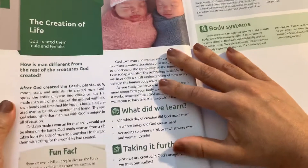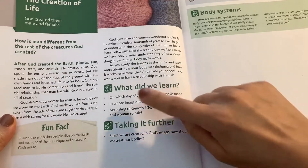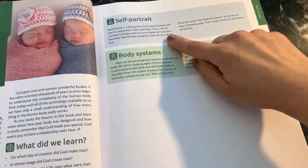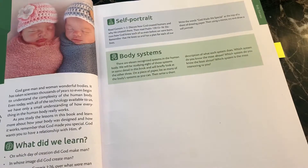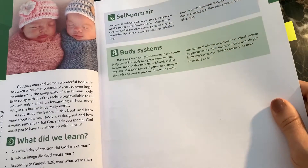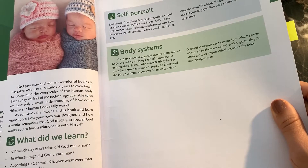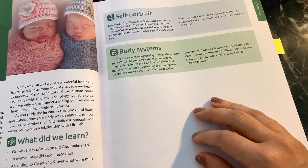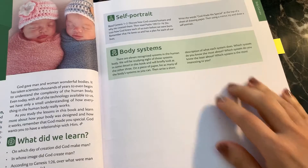The very first lesson in unit one is the creation of life. You can see the icons I mentioned — 'what did we learn,' 'taking it further,' and a self-portrait activity. The additional activity for older children asks them to list the 11 recognized systems in the human body, noting that they'll study eight of those systems. It's great because you can see what they knew upfront, and at the end of the year we went back to this list and were able to see all that they had learned.